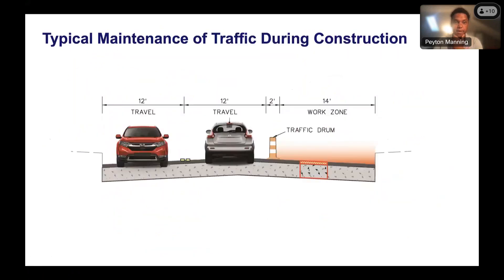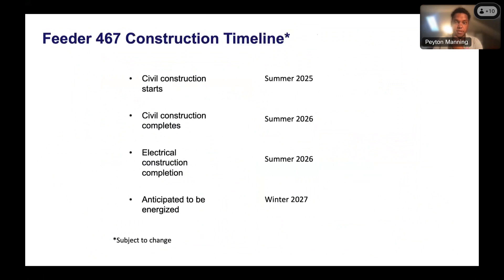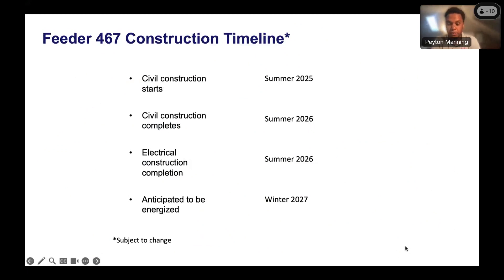To review the timeline: we're anticipating construction to start summer 2025. It's approximately a 12-month project, so civil construction — putting structures and conduit below ground — should finish by summer 2026. After that, the PEPCO team will return to work within the manholes to pull wire during the electrical phase. Once that's completed and the power lines are underground, the system will be energized, and about a month or two later you'll start seeing existing overhead lines come down, though most poles will remain.